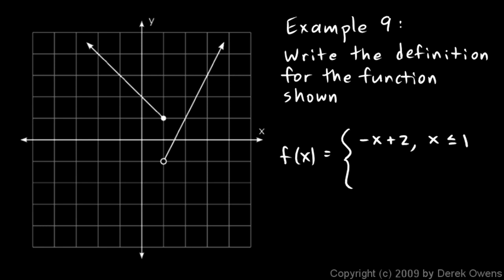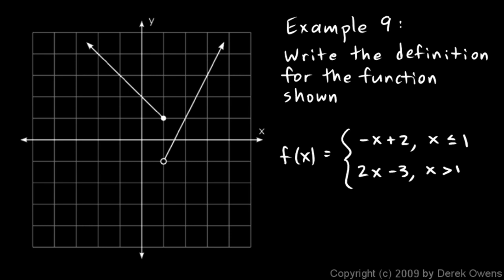If x is greater than one, we're along the right-hand line. Extending that line, we get a y-intercept of negative three, and the slope is two — up two over one between any two points. So that line is two x minus three, and it applies when x is greater than one — not greater than or equal to, because there's an open circle there. Once again, we write the definition for each piece and specify the appropriate domain for each piece.